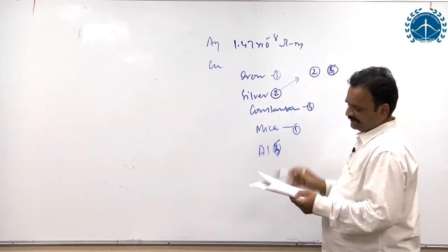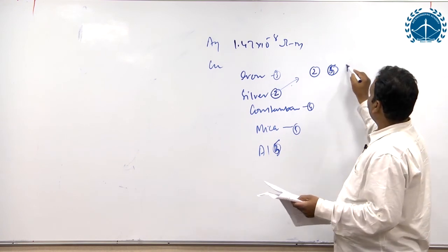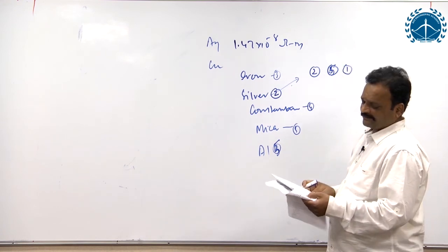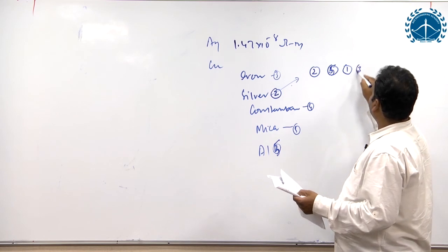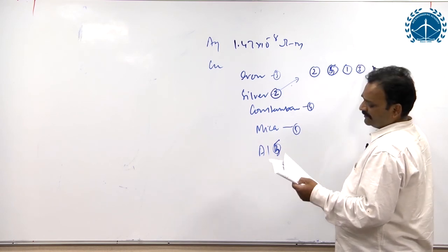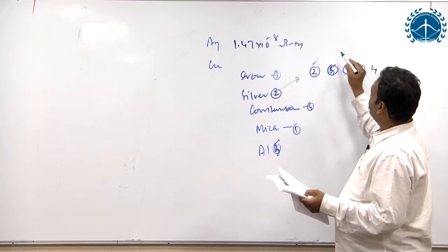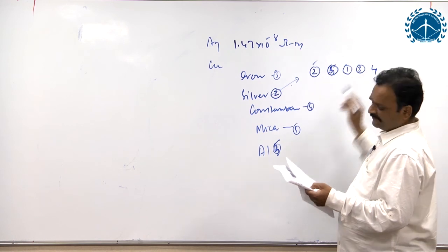So 2 and 5. Third one should come iron, iron serial number is 1 here. Next one is constantan serial number is 3 and the last one is mica, highest resistivity mica serial number is 4. So the correct sequence in ascending order of resistivity is 2, 5, 1, 3, 4.